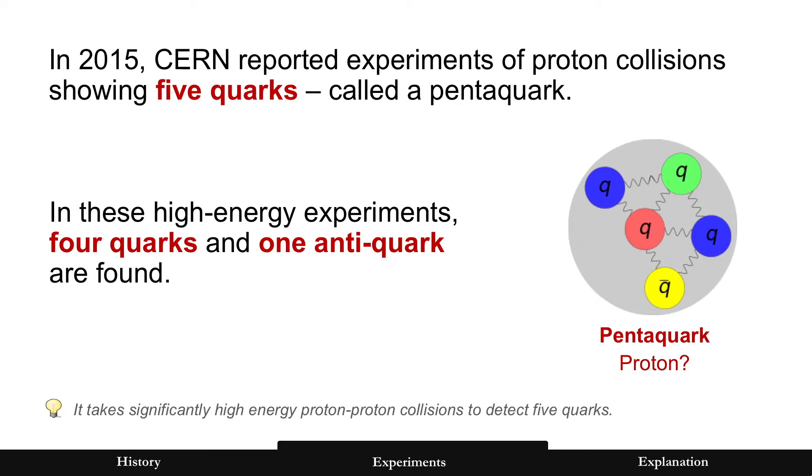But in 2015 CERN reported experiments of proton collisions now showing five quarks. It's called a pentaquark. The important thing here to remember for the upcoming slides is in these energy experiments, and there has to be high-energy experiments, four quarks and one anti-quark, that's anti-matter, are found.